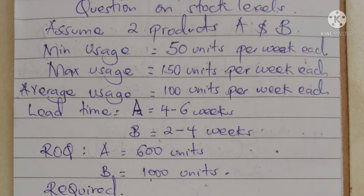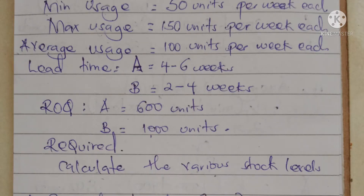The question goes like: assume two products A and B. The minimum usage for both products is 50 units per week each, the maximum usage is 150 units per week each, and the average usage is 100 units per week each. The lead time for product A is four to six weeks, and for product B it is two to four weeks. The economic order quantity for product A is 600 units and for product B it is 1,000 units.